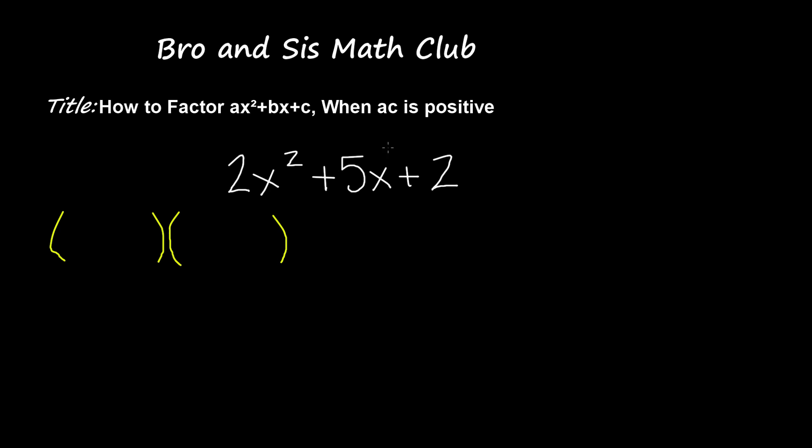So once we have that, first we're going to identify the a, b, and c values. So a is 2, b is 5, and c is 2 as well.